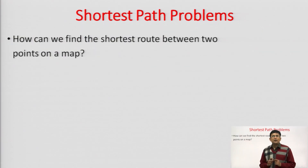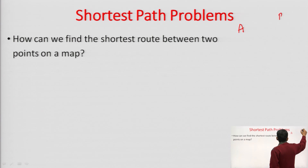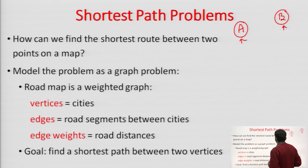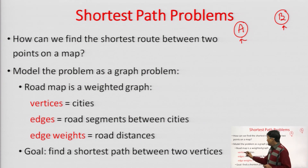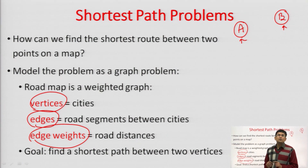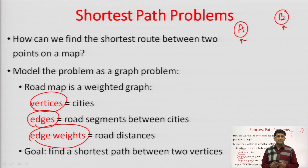Let's say you have to book a cab. For booking a cab, you specify your source and destination. To find out the shortest path between these stations, the entire map of the city should be represented using a graph. The vertices would be representing the stations or cities, the edges would be the road segments, and the length of the road segment is represented by the edge weights.